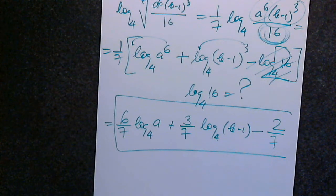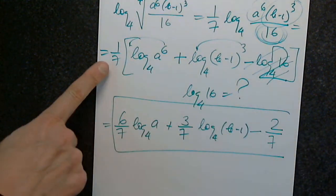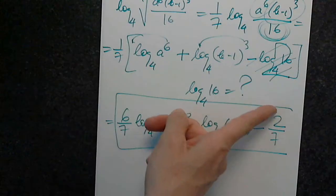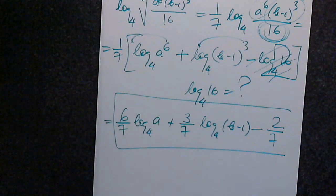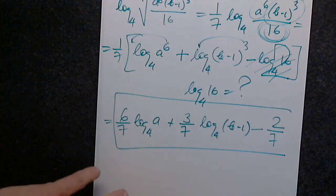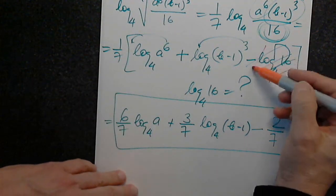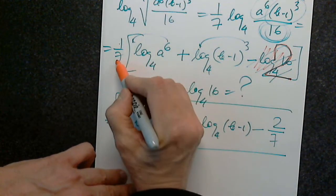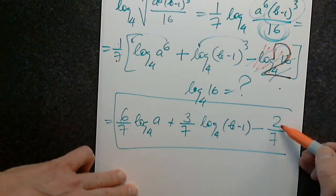I have 2 and I have to distribute 1 over 7. 1 over 7 times 2 over 1 is 2 over 7. The 2 comes from log base 4 of 16, since 4 to the 2nd equals 16. This whole thing is 2, so 1 over 7 times 2 gives 2 over 7.